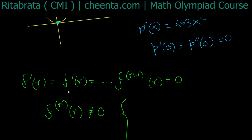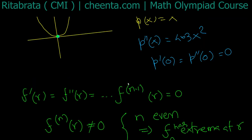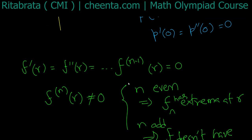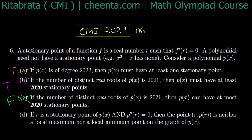If n is even, then f has an extremum at r. If n is odd, f does not have an extremum at r. In our example, the second-order derivative at 0 is zero, but if the first nonzero higher derivative is of even order and nonzero, then we can conclude it is an extremum. So the statement that f'(r) = 0 necessarily implies a sign change is false.